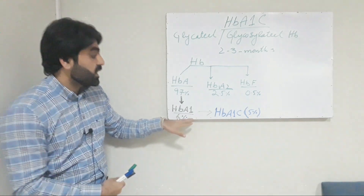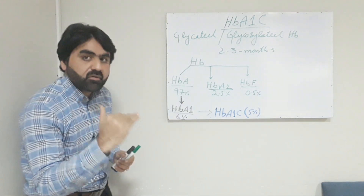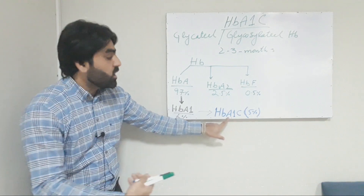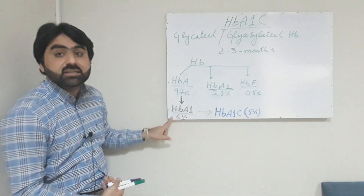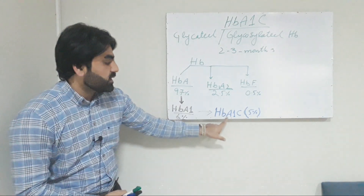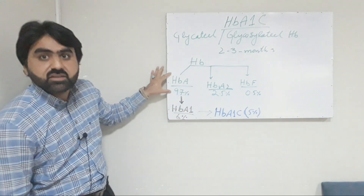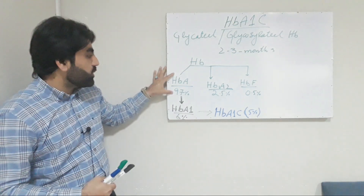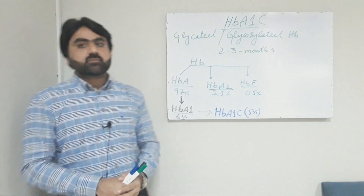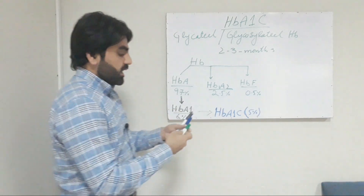This HbA1 has further sub-fractions, and among those sub-fractions, HbA1c is the most abundant fraction, which is 5% of this total 6%. In simple words, you can say that HbA1c is 5% of the total HbA, or the most abundant hemoglobin fraction of an adult individual.